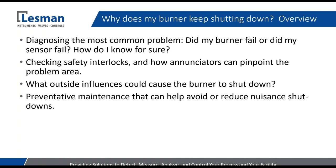We'll also briefly talk about the safety interlocks — those running interlocks have to be made at all times, not only during the light-off sequence but while we're running. Enunciators are great tools to help us narrow down and pinpoint the cause of that issue. We'll also talk about outside influences; the flame safeguard is really the core safety component in any burner management system, but outside influences could cause some issues. And finally, we'll cover preventative maintenance — things you can do proactively to keep your burner up and running.